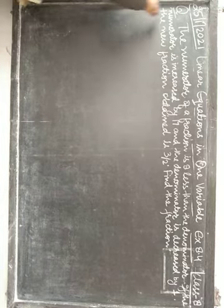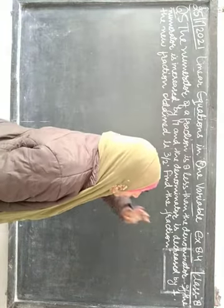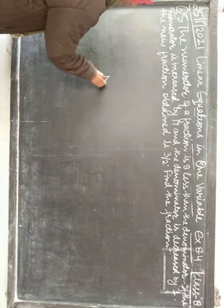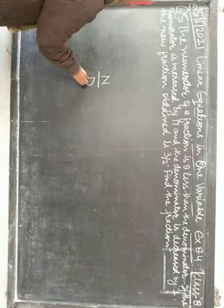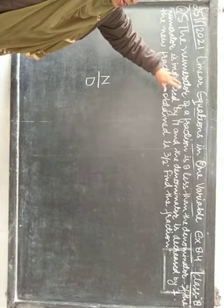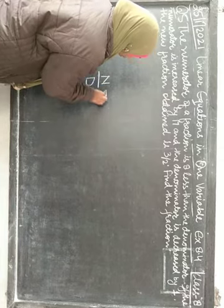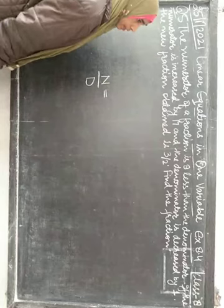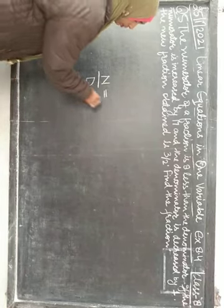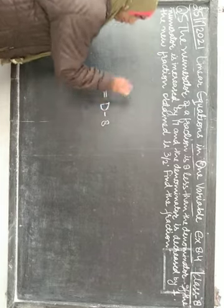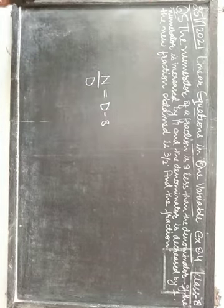The numerator of a fraction is 8 less than the denominator. Fraction ki baat hoi hai — numerator upon denominator. Numerator jo hai, vo denominator se 8 less hai. 8 less than the denominator, matlab jitna denominator hai, usse 8 aur less kar dijiye, to vo ban jaata hai numerator.